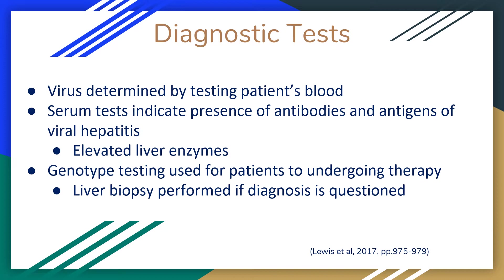In acute hepatitis, to determine the virus type, the patient's blood must be tested. For hepatitis A virus, anti-HAV immunoglobulin M is present in acute infection, while anti-HAV immunoglobulin G is present in previous infection or immunization. Hepatitis B has several markers: hepatitis B surface antigen indicates acute and chronic infection; hepatitis B surface antibody indicates previous infection or immunization; hepatitis B-E antigen indicates high infectivity; hepatitis B-E antibody signifies previous infection; antibody to hepatitis B core antigen indicates acute infection and does not appear after vaccination.